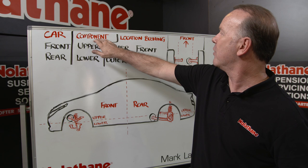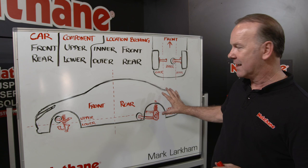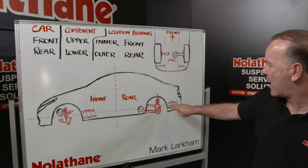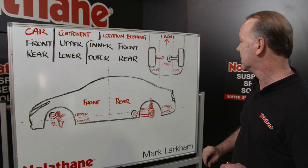So if we split a car into different planes, obviously there's a front and a rear. Given the components, there's always an upper and a lower, particularly where they're in the same family of components. And then of course there's an inner and an outer.